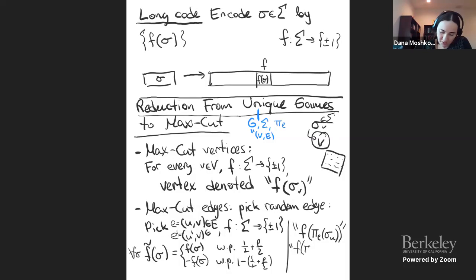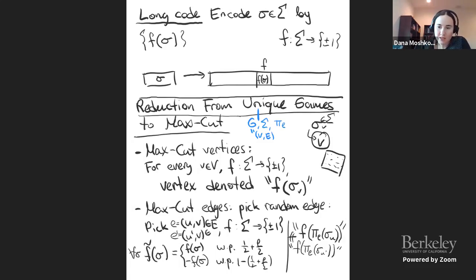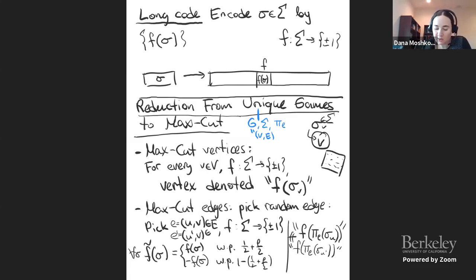Let me break this down. An edge means I want those two endpoints to have different Boolean assignments. U is supposed to get label σ_U, and U' gets σ_{U'}. The label of U, mapped through π_E, gives an induced label for V. The label of U', mapped through π_{E'}, gives the label V is supposed to get according to U'. In the good case these induced labels agree, so f applied to both gives the same value, meaning f and -f̃ should be different.